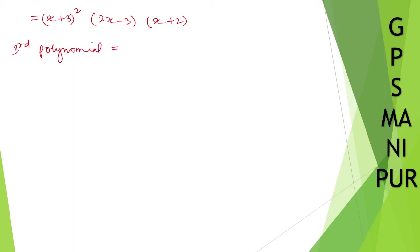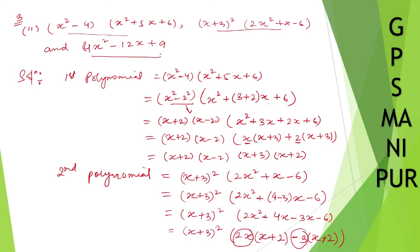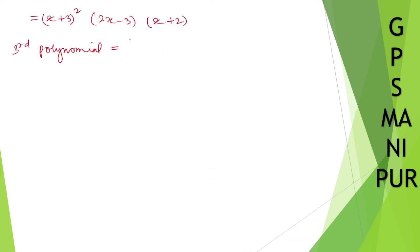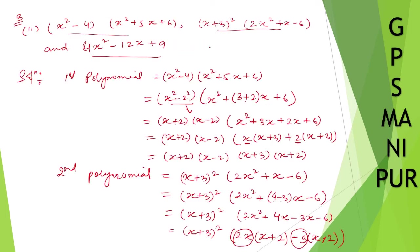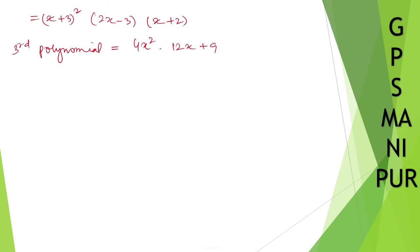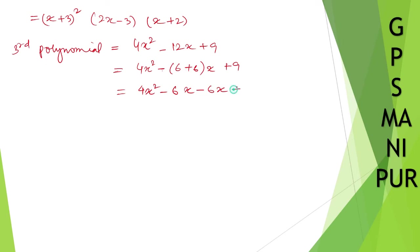The third polynomial is 4x squared minus 12x plus 9. For splitting the middle term: product is 4 times 9 equals 36, and 6 plus 6 equals 12. So I write 4x squared minus 6x minus 6x plus 9.